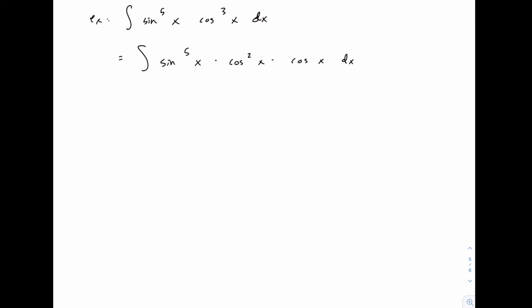We'll rewrite this as sine to the fifth of x times cosine squared of x times cosine of x. Which means we're heading down a path to let du take care of the cosine so we're going to let u equal sine of x. So that du will equal cosine of x. Which means this part is okay. It's already written in terms of sine. It's this middle piece, the cosine squared, that needs to be rewritten in terms of sine. So that's what we replace with 1 minus sine squared.